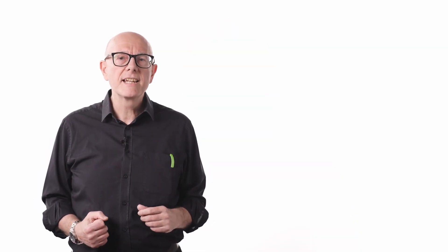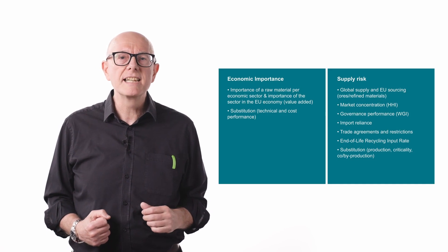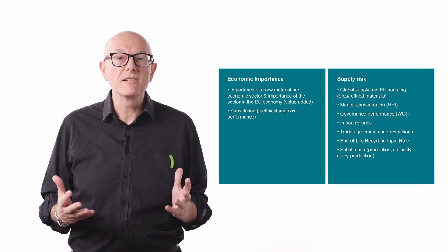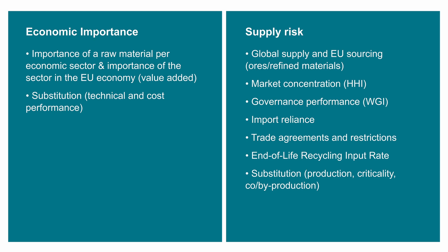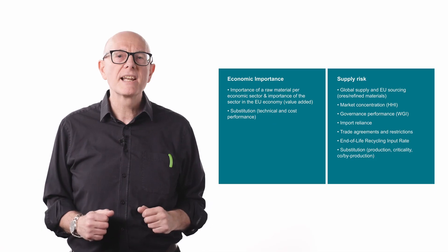So what factors go into creating a picture of supply risk and economic importance for any given material? There are many factors shown here in the two blue boxes. Factors such as market concentration of supply from particular countries, world governance index, import reliance, trade agreements, recycling and substitution are all important and complex assessments.